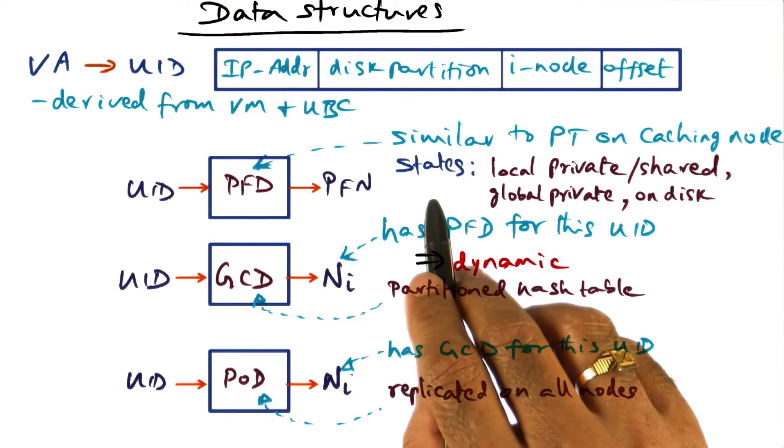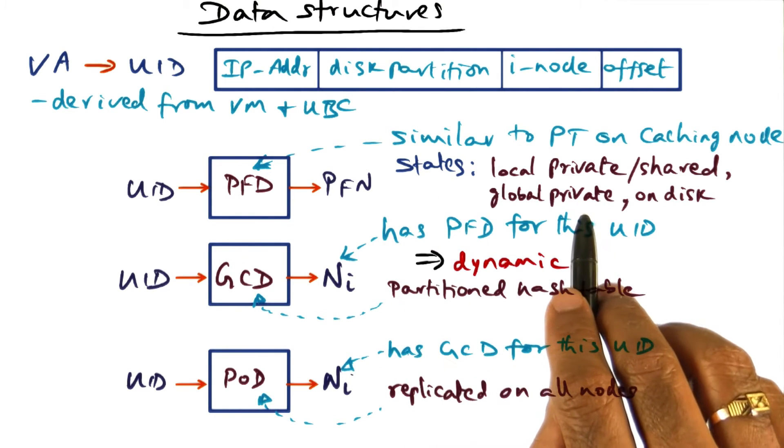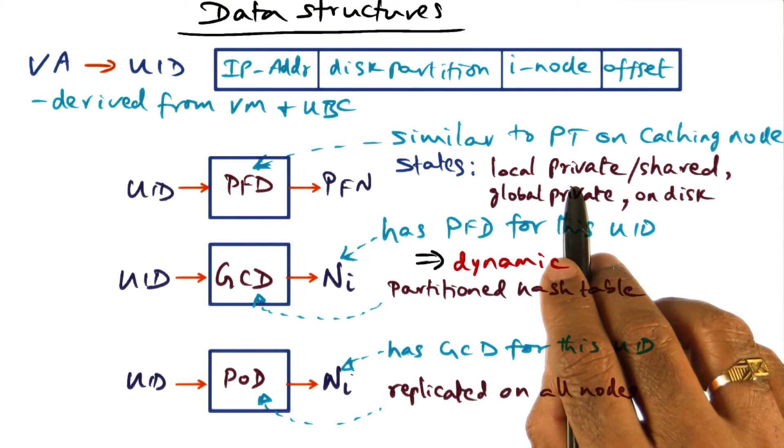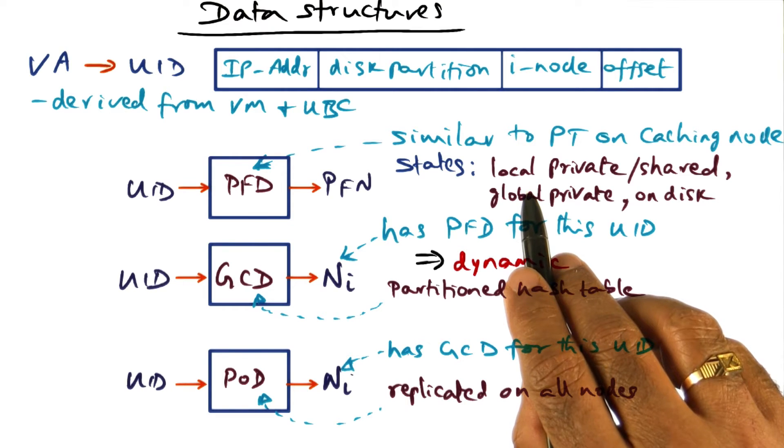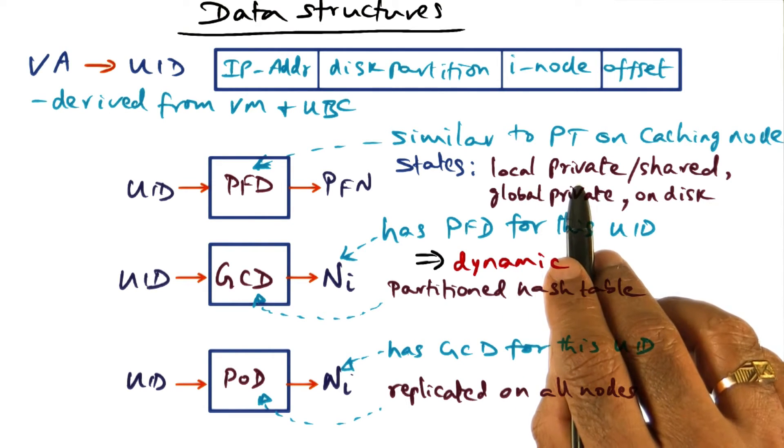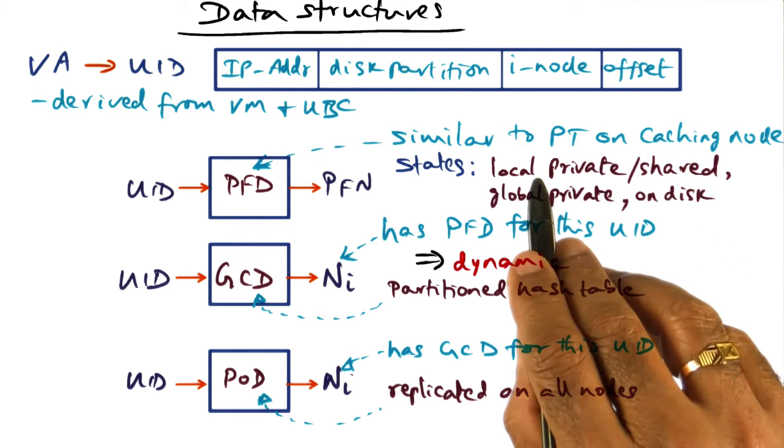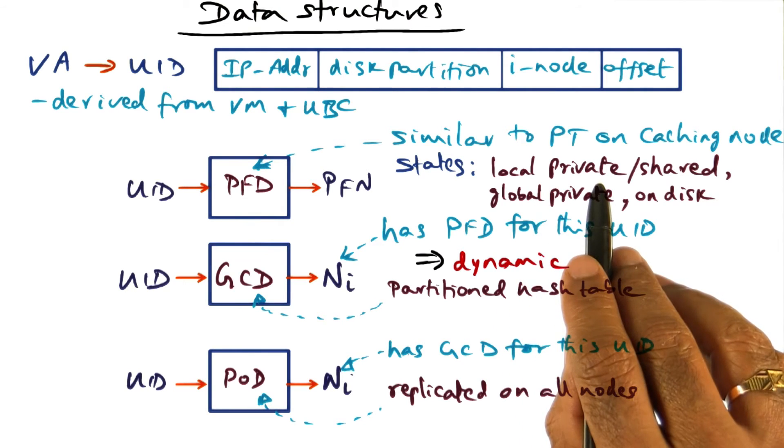Because we're doing cluster wide memory management, the page itself can be in one of four different states. It could be in the local part of that node, and if it is in the local part of a node, then that page could be a private page, or it could be a shared page. These are two possibilities, if it is living in the local part of the physical memory of a node.